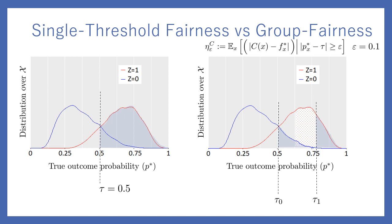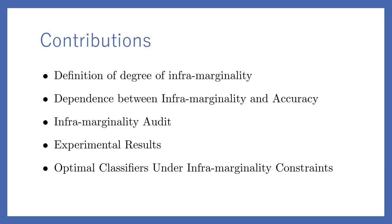These values are important for understanding the effect of group fairness when we consider single threshold fairness as the fair labels. Our contributions are: conceptualizing these ideas by defining the degree of inframarginality; providing theoretical guarantees around the closeness between inframarginality and accuracy; providing a methodology to audit a given classifier; showing how to carry out the audit on real-world datasets; and showing how to find optimal classifiers using inframarginality as a constraint.